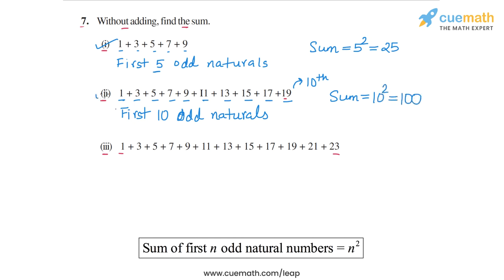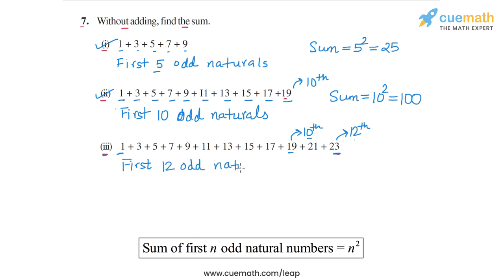Finally, in part 3, we have the sum from 1 up to 23 — all the odd naturals from 1 to 23. We saw that 19 is the 10th odd natural number in part 2, so 23 will be the 12th odd natural number. This sum is basically the sum of the first 12 odd natural numbers, so n is equal to 12, and the sum will be equal to 12 squared, which is 144.